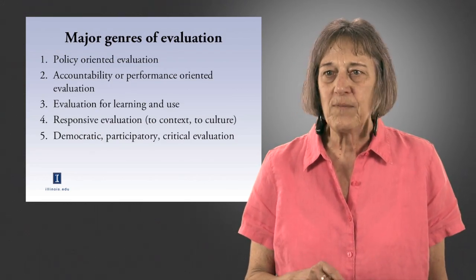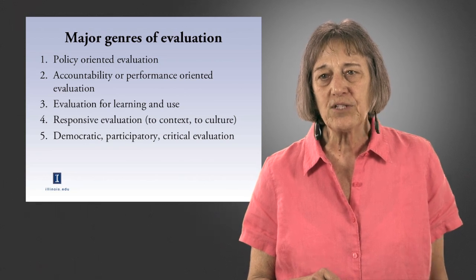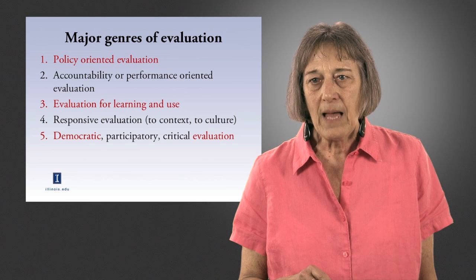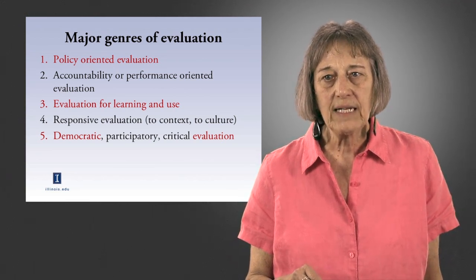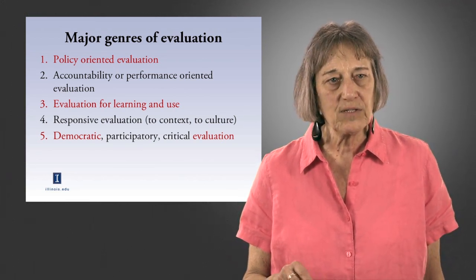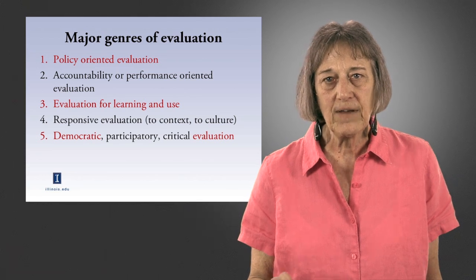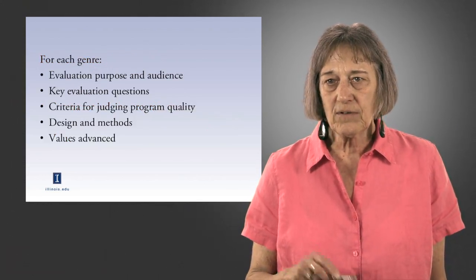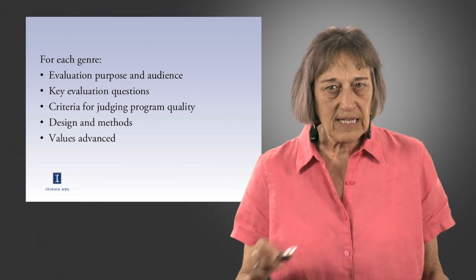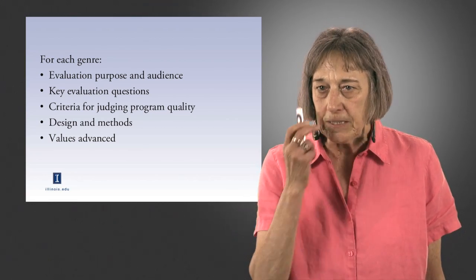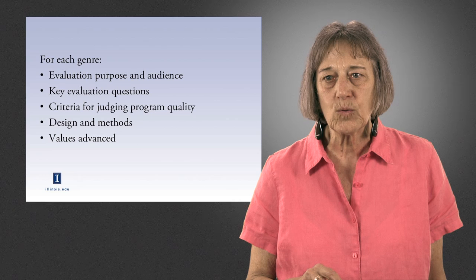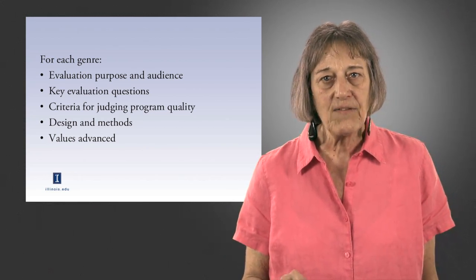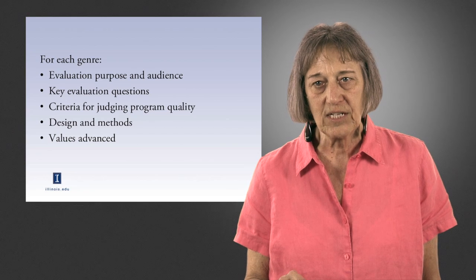These are five major genres or approaches to evaluation that have been developed over this 60 to 70 year period. Three highlighted ones will be illustrated: policy-oriented evaluation, evaluation for learning and use, and democratic evaluation, through a hypothetical example. For each genre, I will address purpose and audience, questions, criteria for judging quality, design and methods, and the values that get advanced in that particular design.